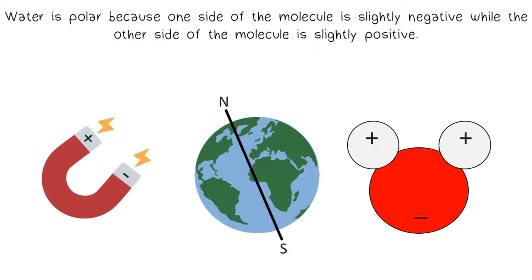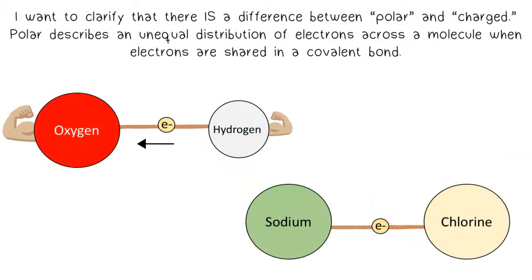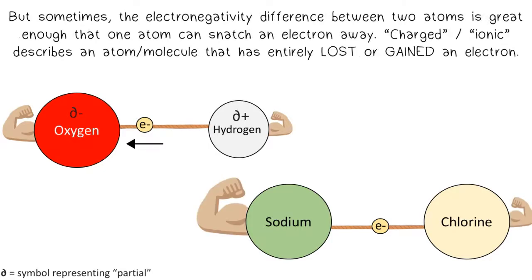Water is polar because one side of the molecule is slightly negative, while the other side of the molecule is slightly positive. I want to clarify that there is a difference between polar and charged. Polar describes an unequal distribution of electrons across a molecule when electrons are shared in a covalent bond. But sometimes the electronegativity difference between two atoms is great enough that one atom can snatch an electron away.